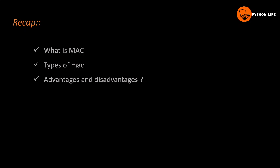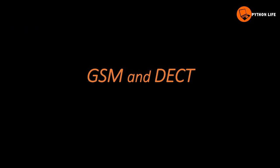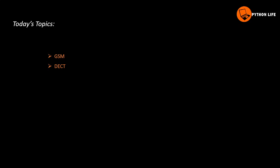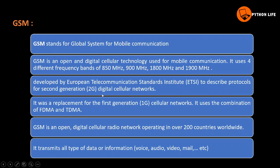In the next class, GSM and DECT are introduced. GSM is Global System for Mobile Communication. DECT is Digital Enhanced Cordless Transmission. Let's talk about the details. First, GSM.